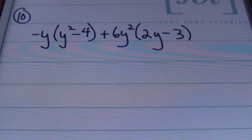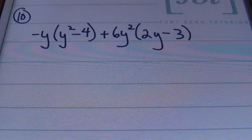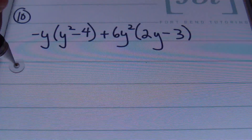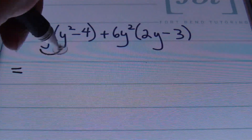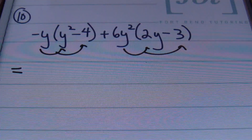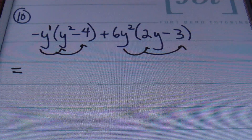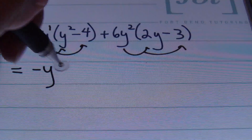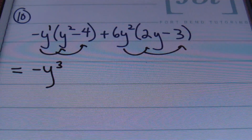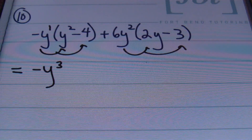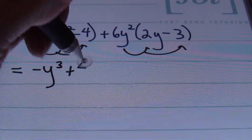For problem number 10, we have negative y times the quantity of y squared minus 4 plus 6y squared times the quantity of 2y minus 3. I'll be distributing. Negative y times y squared: remember this is a negative y to the first power, and we'll be adding the exponents — negative y times y squared gives me negative y to the third power. When multiplying your variables, you add the exponents on those like variables. Then multiplying negative y times negative 4 gives me a positive 4y.